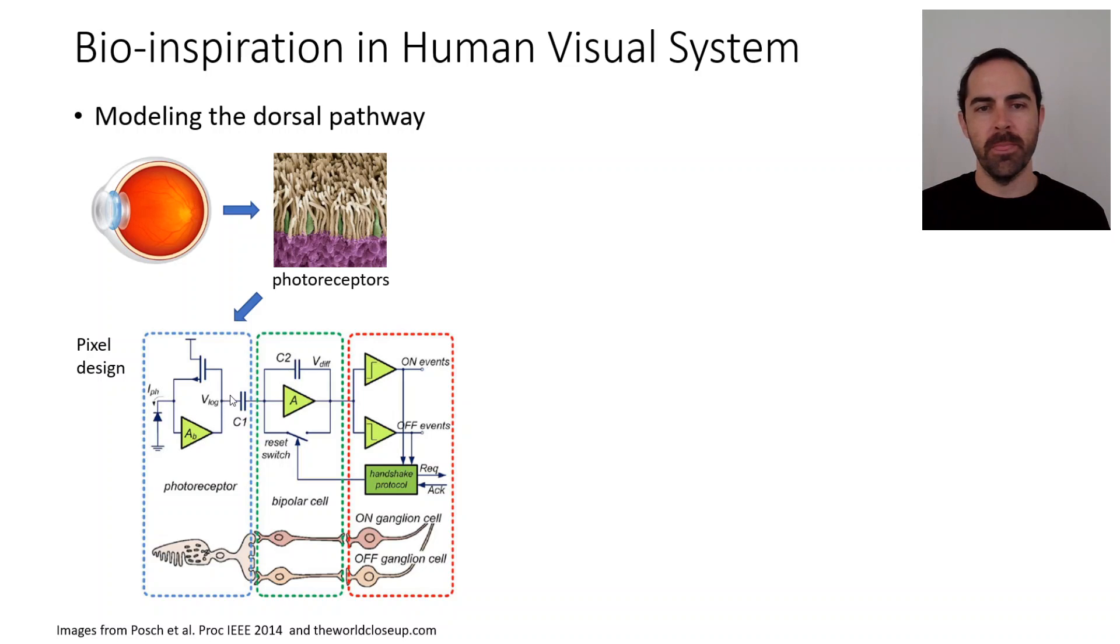Then there is a second stage modeling the bipolar cell that is doing the differentiating and the amplification. Then there is a third stage modeling the ganglion cells, on and off ganglion cells, that is doing quantification. It's comparing this voltage that comes here with two comparators.